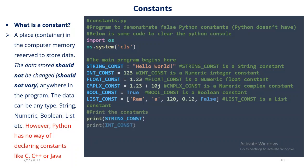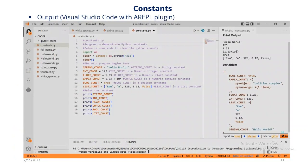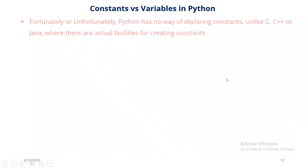We can print out the constants just like the way we printed out the variables. If you copy this code to Visual Studio Code and run it, this is the output you are going to get. I will repeat this for emphasis: Python has no way of declaring constants, unlike C, C++, or Java — where there are actual facilities for creating constants which the program understands and a user cannot change inadvertently.